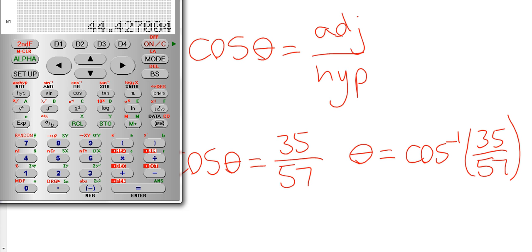So if I plug that into my calculator, second function, cos, I want 35 divided by 57.